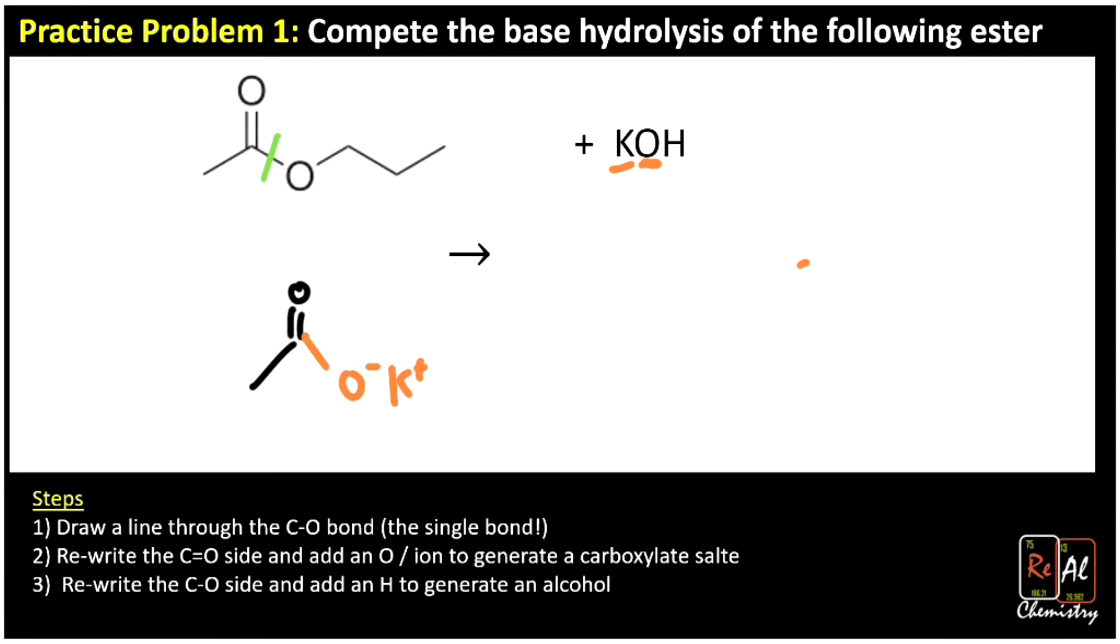The other product we get is from writing the oxygen that's single-bonded to carbon, that side. We rewrite that O up, down, up. And we're going to go ahead and track this H down to there to make our alcohol. So there you go. That's another base hydrolysis of an ester.